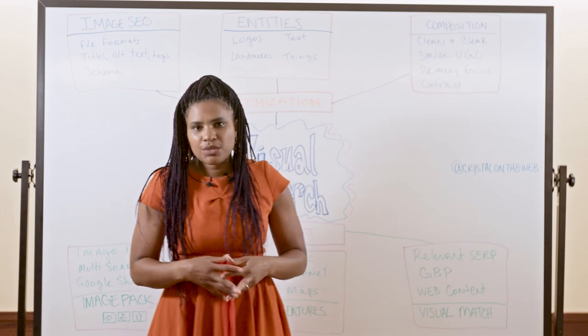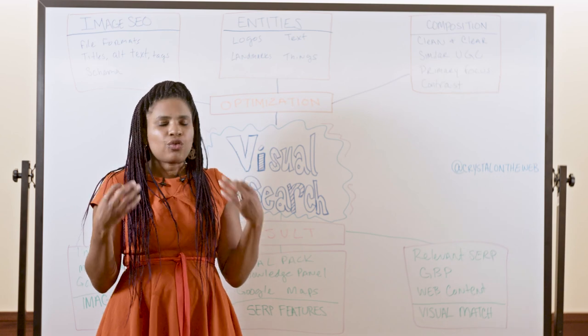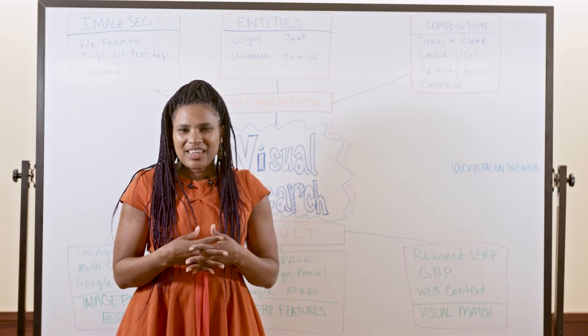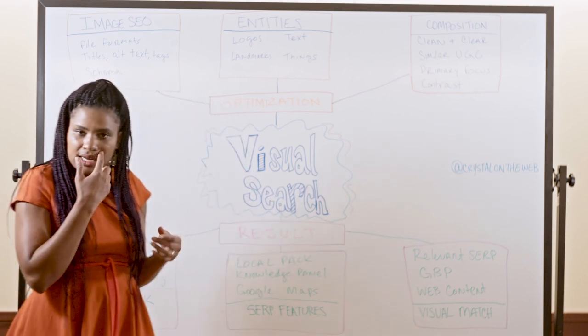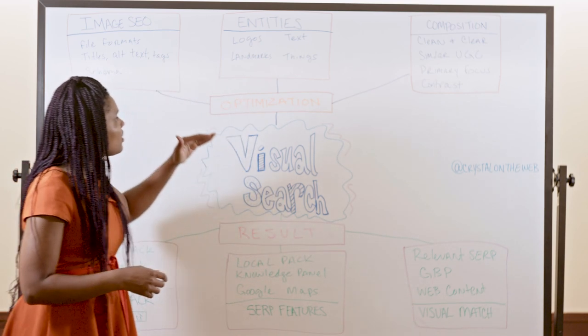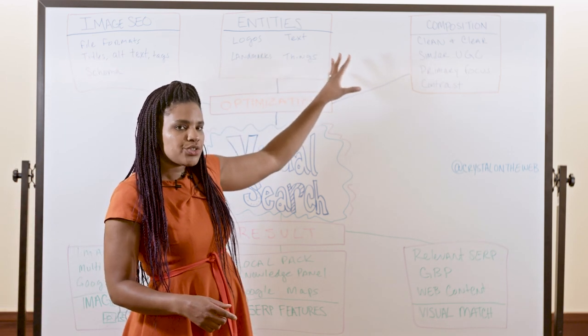You also want to think about contrast, just making sure that it's very clear what the focus of the image is. And so that you've got whatever is the focus of your image very clear and easy to decipher, not too busy if you need it to be about a single thing. So these different elements are things that you should consider when you're optimizing your images for visual search, particularly for Google Lens.